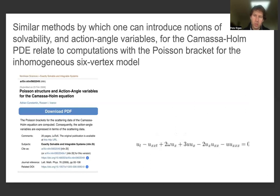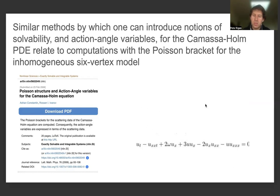Similar methods by which one can introduce notions of solvability and action-angle variables for the Camassa-Holm PDE relate to computations with the Poisson bracket for the inhomogeneous six-vertex model. This PDE demonstrates how there are different types of action-angle variables corresponding to the Camassa-Holm PDE or the inhomogeneous six-vertex model, and how one can introduce a transformation of variables to obtain a desirable two-dimensional Hamiltonian system, which helps characterize the Poisson structure.